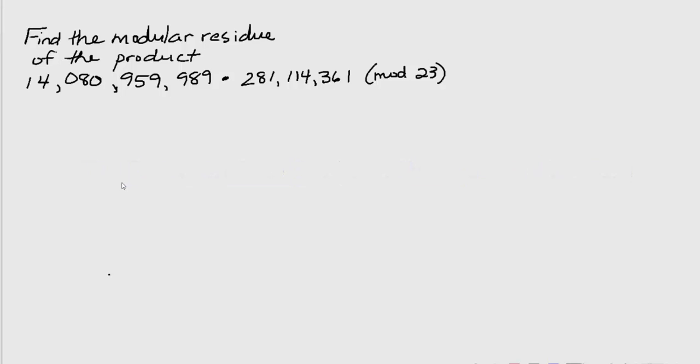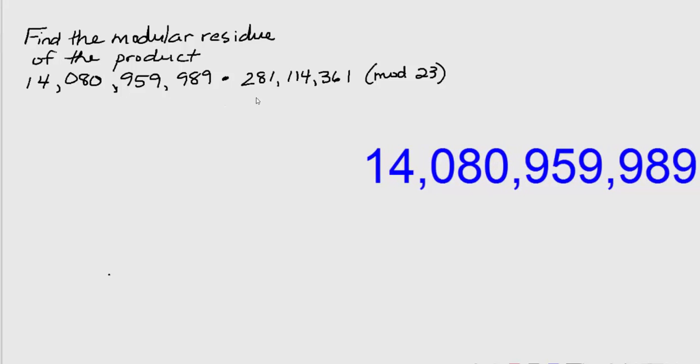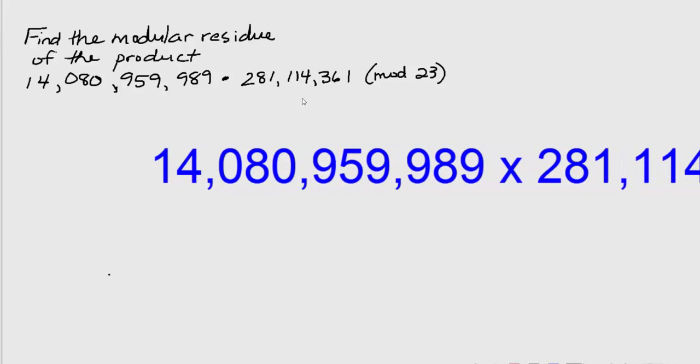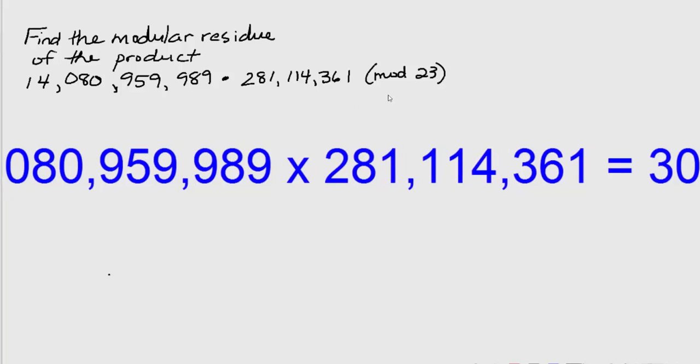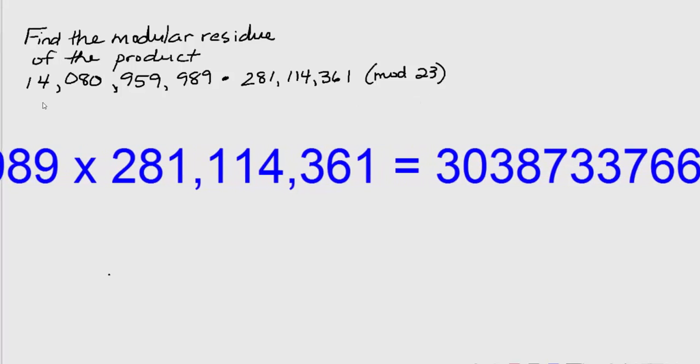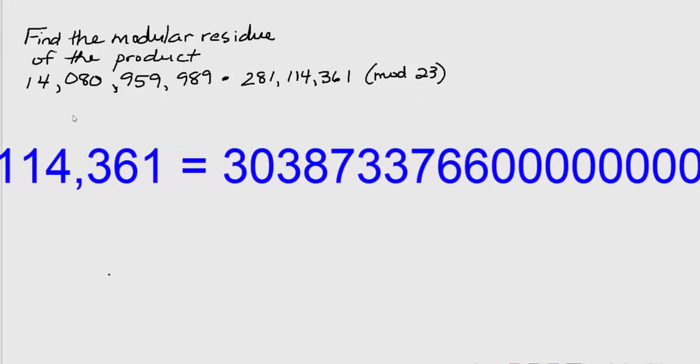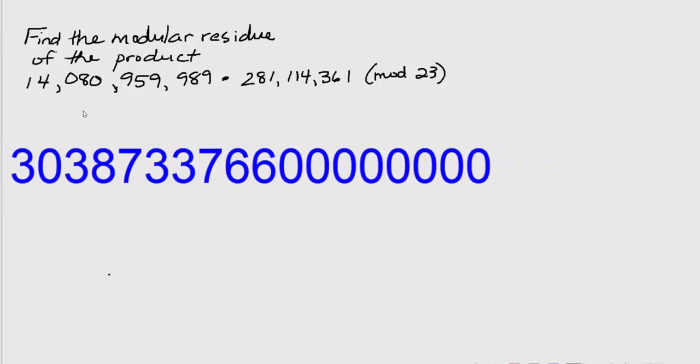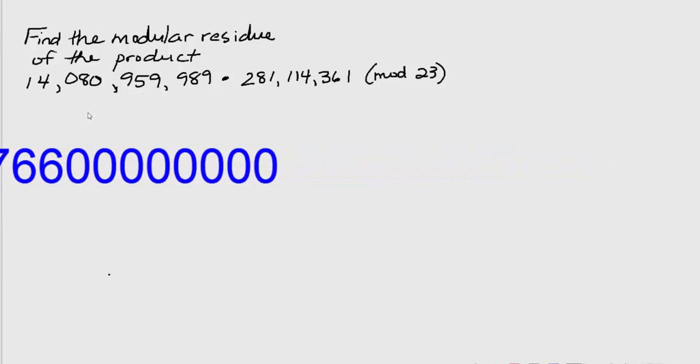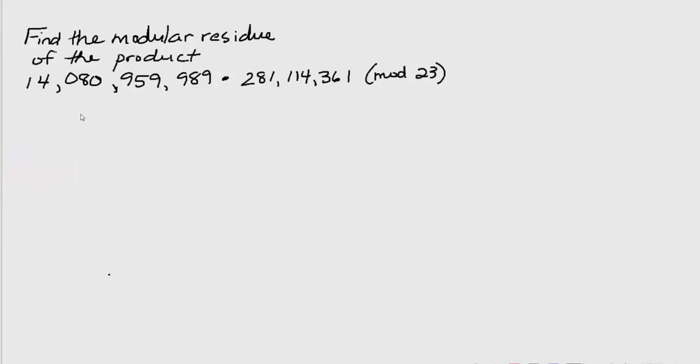When we have very large numbers, it can be difficult to plug the problem into our calculator. In this case, we have 14,080,959,989 times 281,114,361 mod 23. If you plug this product into your calculator, you'll find that it overflows, and you're going to get an answer that is an estimate in scientific notation.